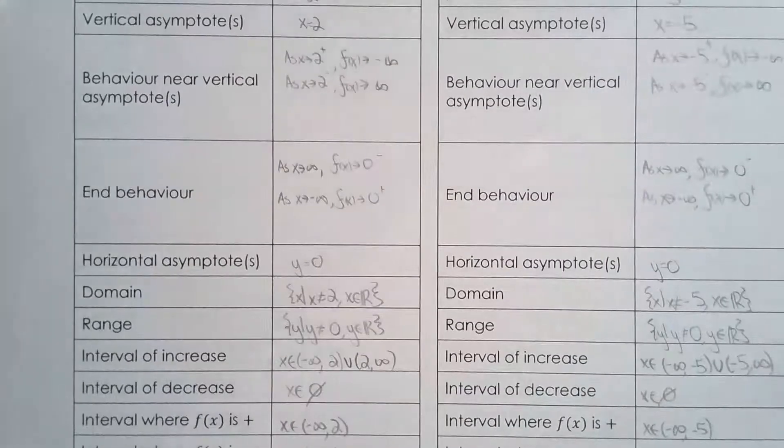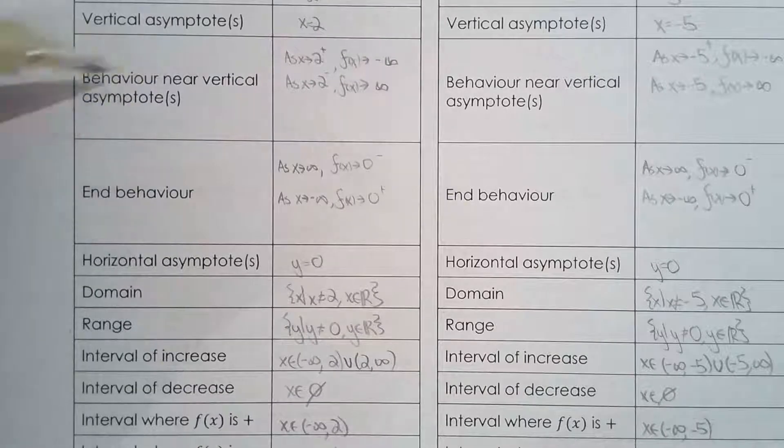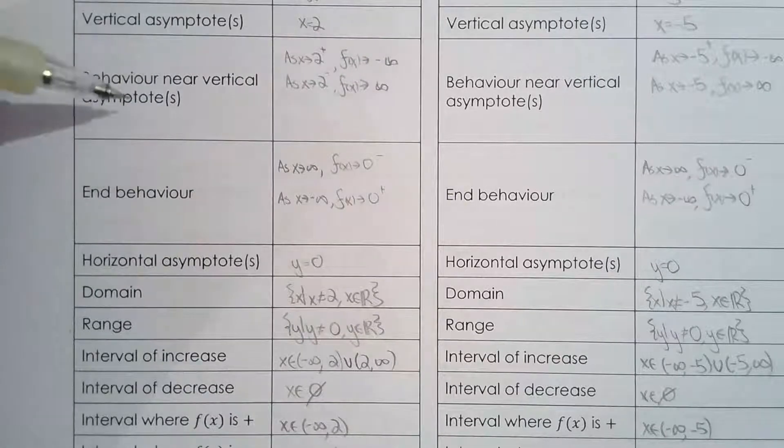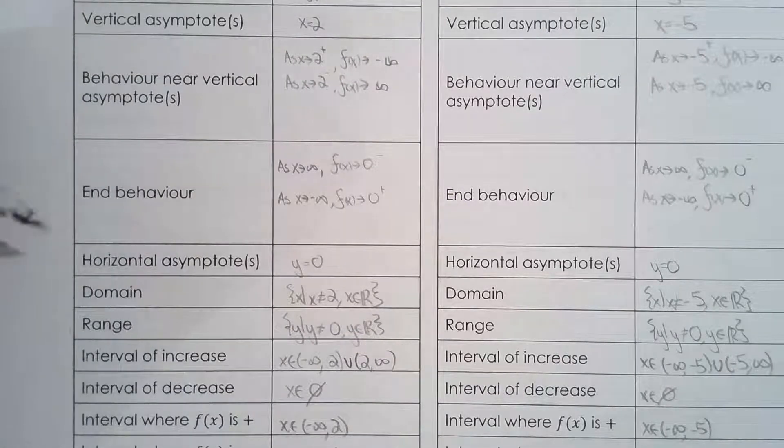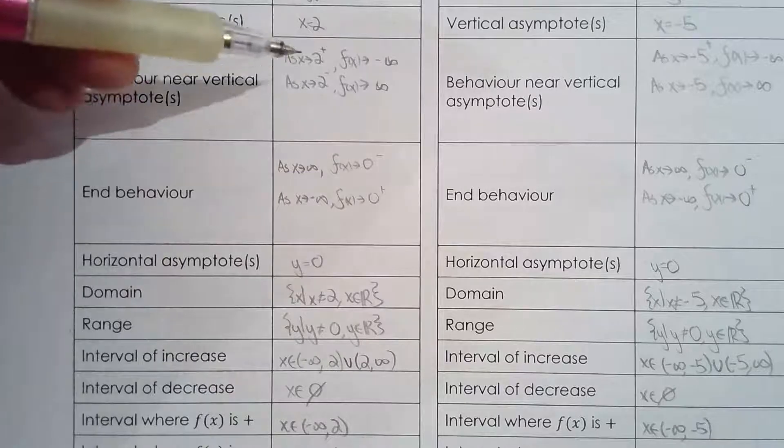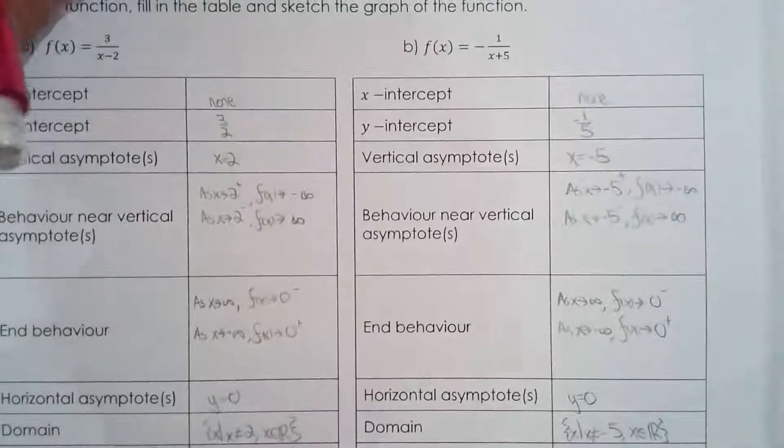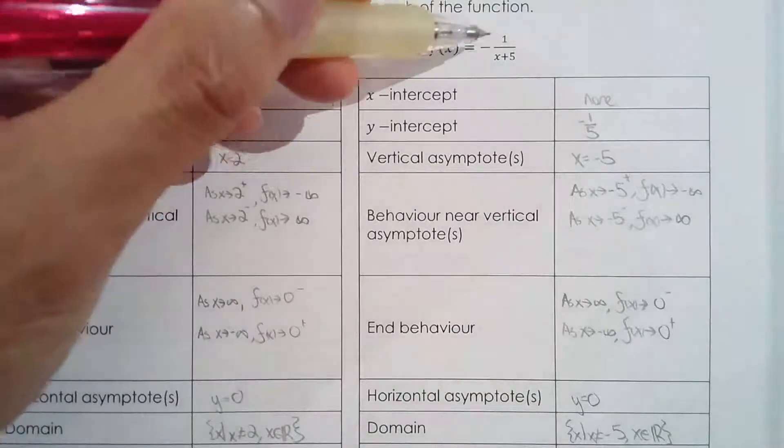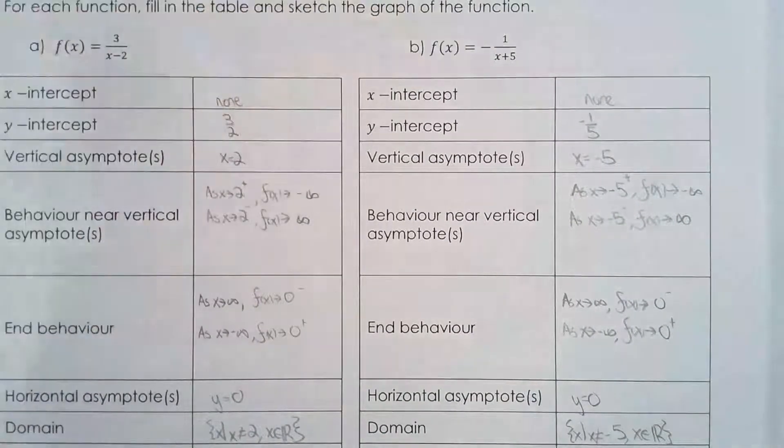Like I said before, if someone simply asked me what's the behavior near vertical asymptote given f of x, then I would just answer that question algebraically without the graph. So this f of x equals negative 1 over x plus 5.